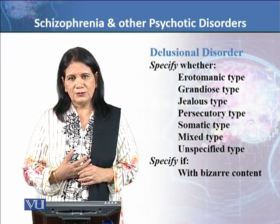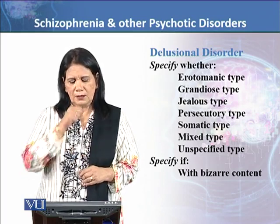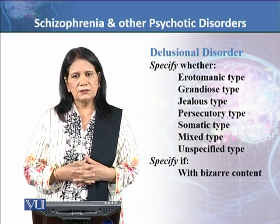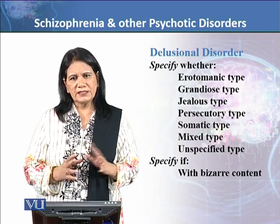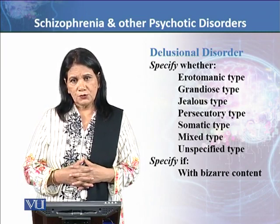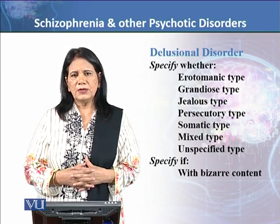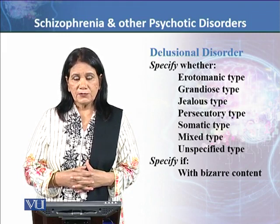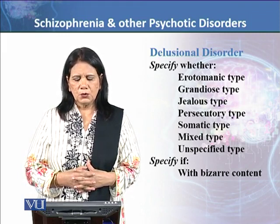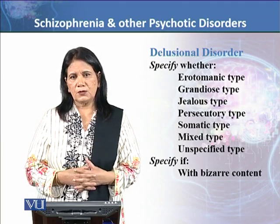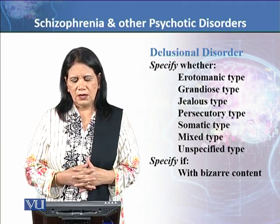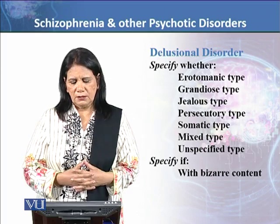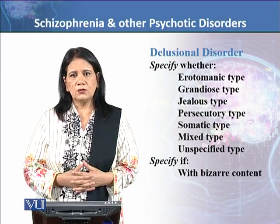Then there is the jealous type, where the patient is excessively jealous about other people. Jealousy is normal, but when it is excessive it becomes a delusional type. Persecutory type means the patient believes that people are against them, want to kill them, or want to poison them. It becomes very difficult to deal with this kind of delusion, and they are very alert that no one can harm them.